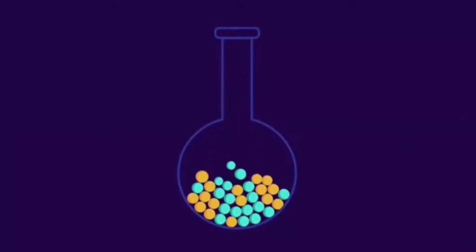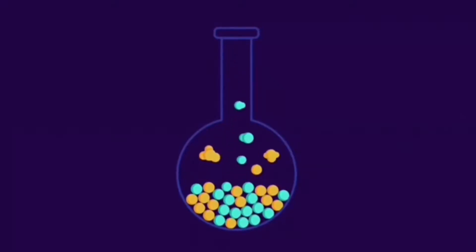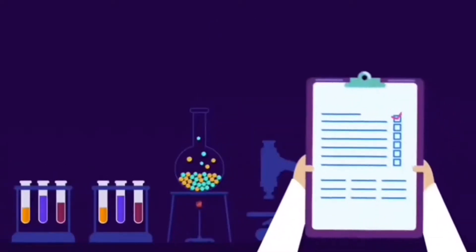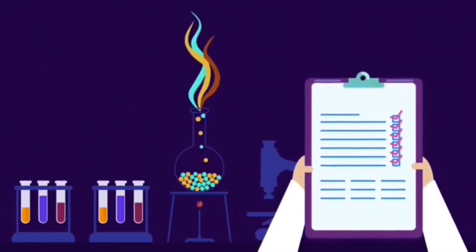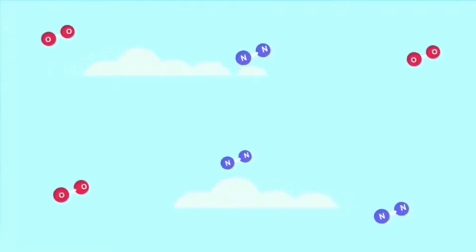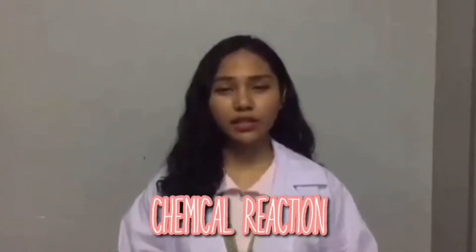Chemistry is a big part of our lives. It investigates and identifies the properties of a certain matter and ways in which they interact, combine, and change, and the use of these processes to form new substances. But how does chemistry take part in our life? The best example is chemical reaction, which occurs not just in our body but also in our environment.